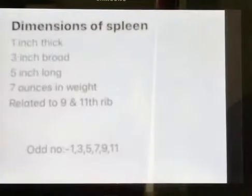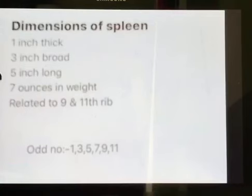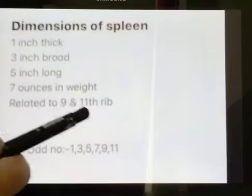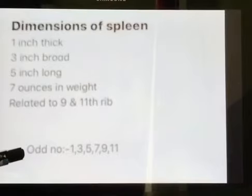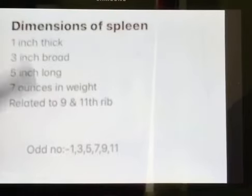Talking about its dimensions, it is 1 inch thick, 3 inches broad, 5 inches long, 7 ounces in weight, related to the 9th and 11th ribs. All of these can be memorized using these odd numbers: 1, 3, 5, 7, 9, 11.